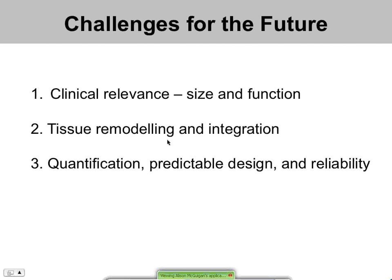Some of the challenges for the future of tissue engineering include clinical relevance — how can we build large enough tissues that function correctly, undergo complex functions, and that will probably require introducing blood vessels. Another challenge is tissue remodeling and integration: you form a great tissue in your bioreactor, implant it into a person, there's an immune response, inflammation, and the whole tissue remodels. And then another issue is quantification, predictable design, and reliability — really basing these products on fundamental rules so that we know how they're going to behave. This quantification and predictability could also allow us to use engineered tissues for drug screening purposes.